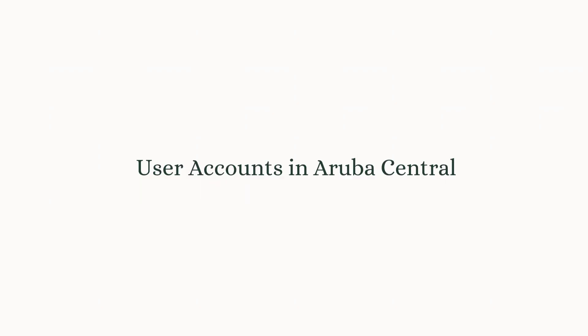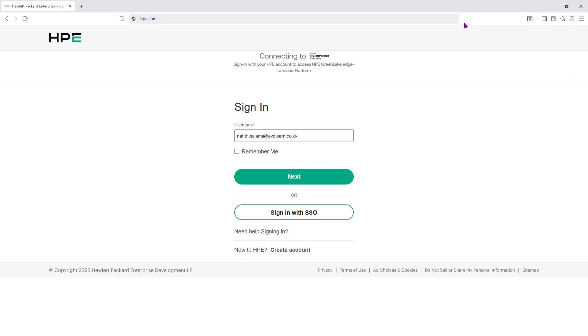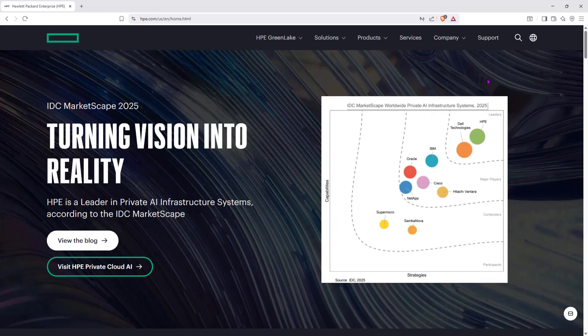Now, how do users get created in Aruba Central? There are different aspects to this, but I'll start with the simple stuff. You can create an account as a demo account — they will give you a demo license for 90 days. Alternatively, you can be invited by someone else. I'll show you both of these, starting with creating an account or signing up to HPE GreenLake.